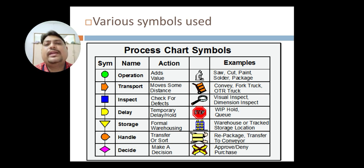For inspection, after completing a particular process or particular production work, you need to check whether that work is up to the mark or not. For that, the symbol used is inspection.